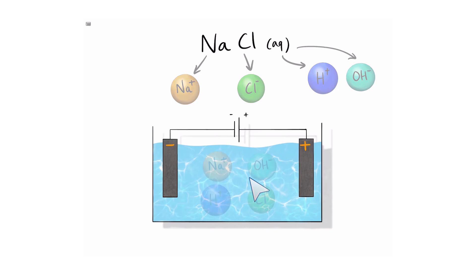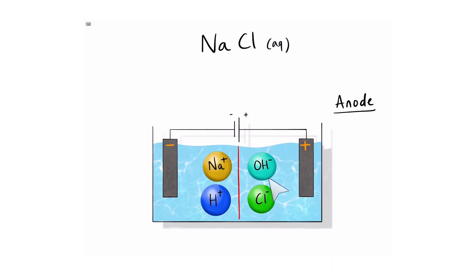All these ions in the solution can be divided into two categories. The negative ions will try to move towards the anode and the positive ions will try to move towards the cathode. However, only one of each ion can move towards the electrodes. So there's a rule that we need to apply to decide which one goes to the electrode and which one stays in the solution.